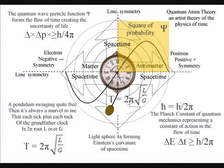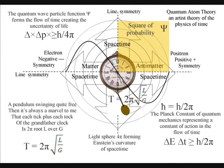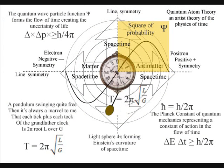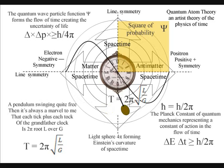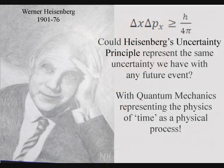A game of billiards is always played over a period of time, in three-dimensional space, with a potential sphere of future uncertainty, that at the smallest level of this process is represented mathematically by Heisenberg's uncertainty principle.